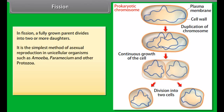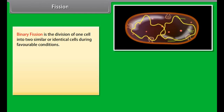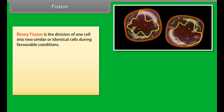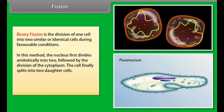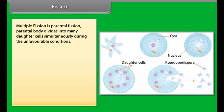In fission, a fully grown parent divides into two or more daughter cells. It is the simplest method of asexual reproduction in unicellular organisms such as amoeba, paramecium, and other protozoa. Fission is of two types: binary fission and multiple fission. Binary fission is the division of one cell into two similar or identical cells during favorable conditions. The nucleus first divides amitotically into two, followed by division of the cytoplasm, and the cell finally splits into two daughter cells. Examples include bacteria, yeast, euglena, amoeba, and paramecium.